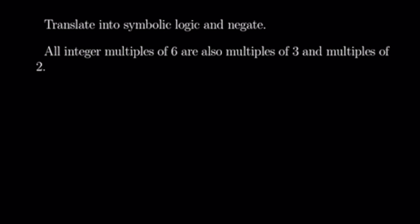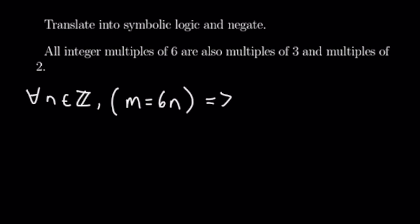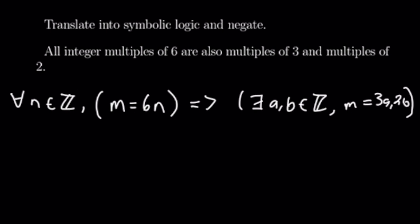This example says: all integer multiples of six are also multiples of three and multiples of two. So we have: for all integers n, the statement m equals 6n implies that there exists integers a and b where m equals 3a and m equals 2b. Relating that back to the original statement, if m is a multiple of six that also means it is a multiple of three and a multiple of two.